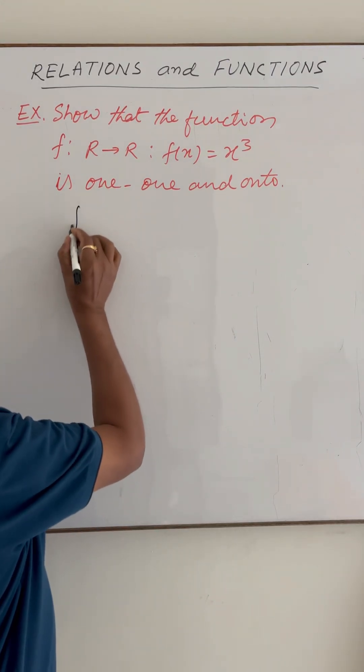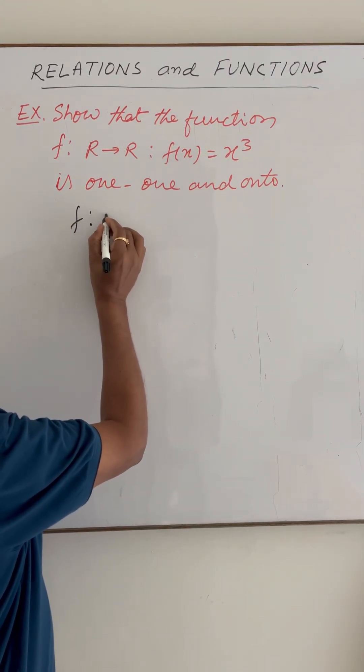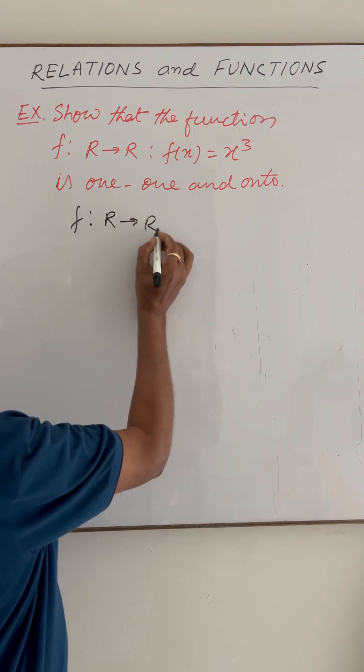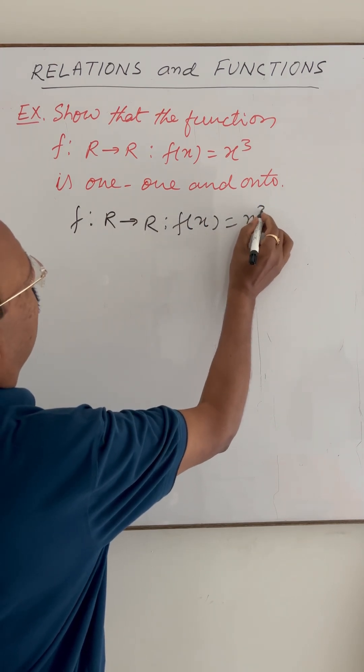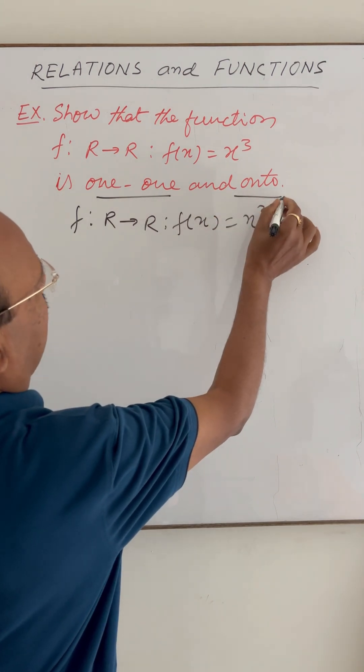Here we have to show that this given function f: R to R such that f(x) is equal to x cube is one-one and onto function.